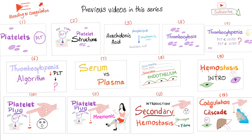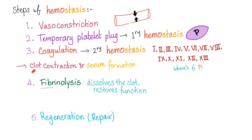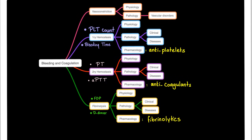This video is part of a series on bleeding and coagulation — check the playlist. Today's topic is a problem in the temporary platelet plug, because ITP is a problem in primary hemostasis, specifically platelet aggregation. Bleeding and coagulation has many steps, and today's problem is here: primary hemostasis.